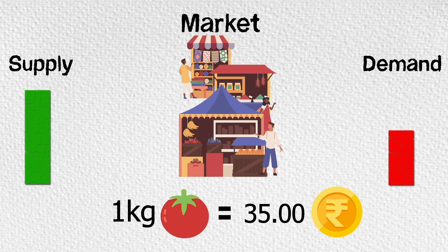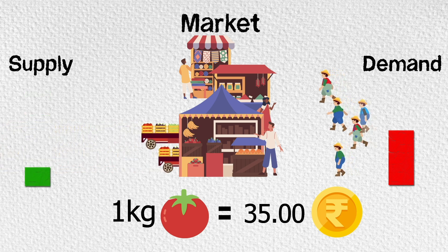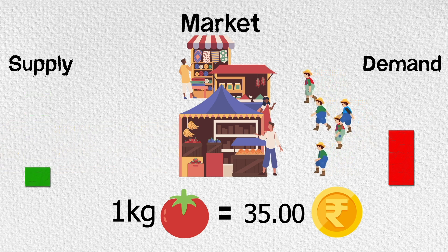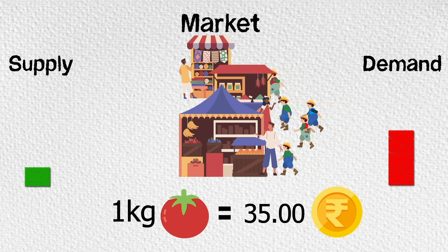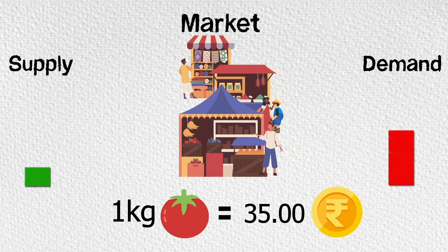The very next week, because of poor climate, we don't get sufficient produce. So instead of 3 lorries, only 2 of them deliver. The same 10 people are stacked up in the market but we don't have sufficient goods, so we increase the price. In other words, we have the same demand for a decreased supply, so the prices increase.